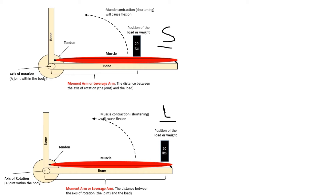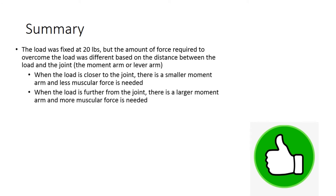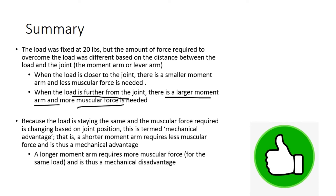To summarize: a longer moment arm requires more muscular force; a shorter moment arm requires less muscular force. This is why we use the terms mechanical advantage and mechanical disadvantage. The advantage state involves a shorter moment arm — less force required — while the disadvantage state involves a longer moment arm. The load was fixed at 20 pounds, but the amount of force required was different based on the distance between the load and the joint. We're changing joint mechanics to influence how much force the muscle needs to move the load.